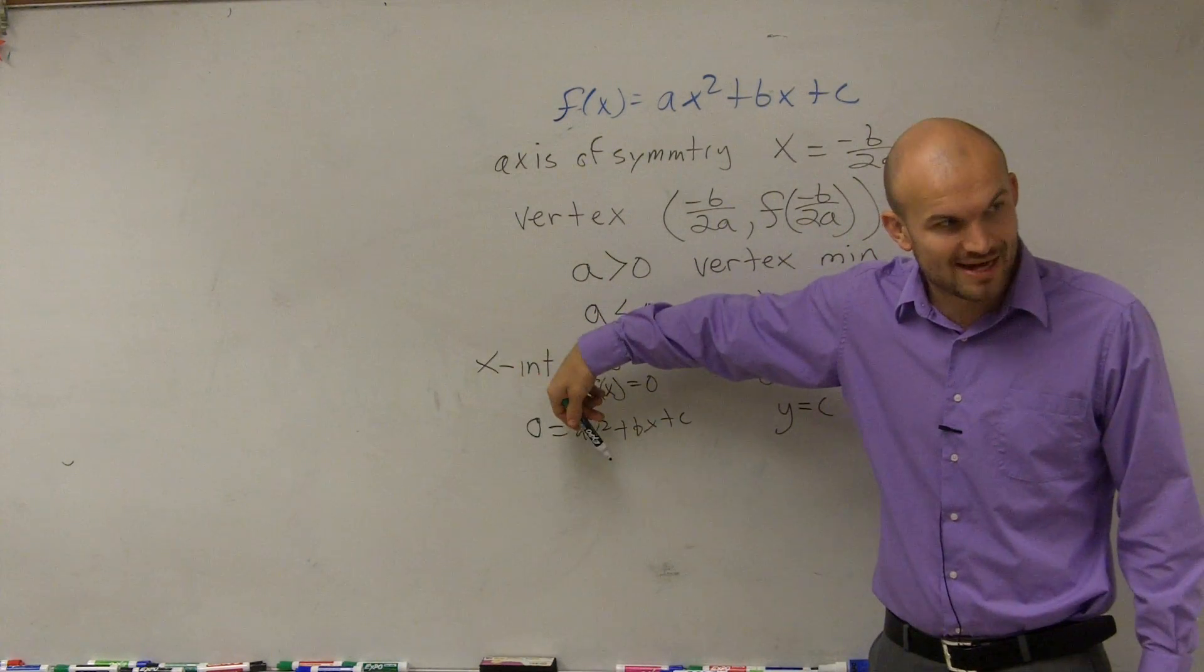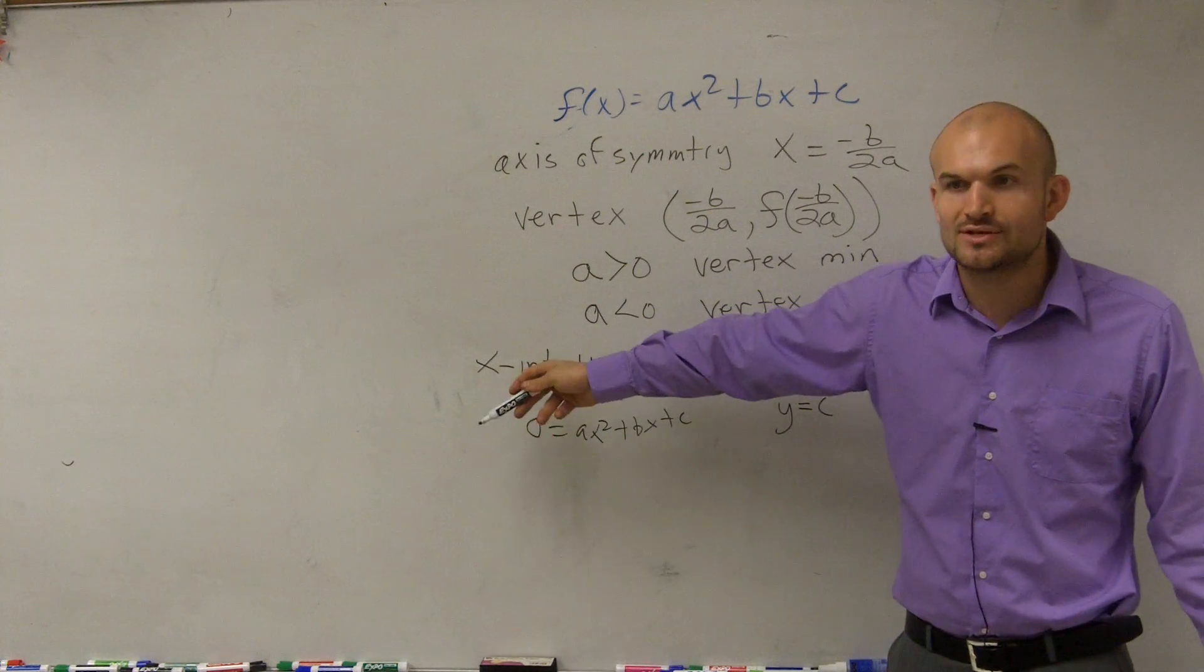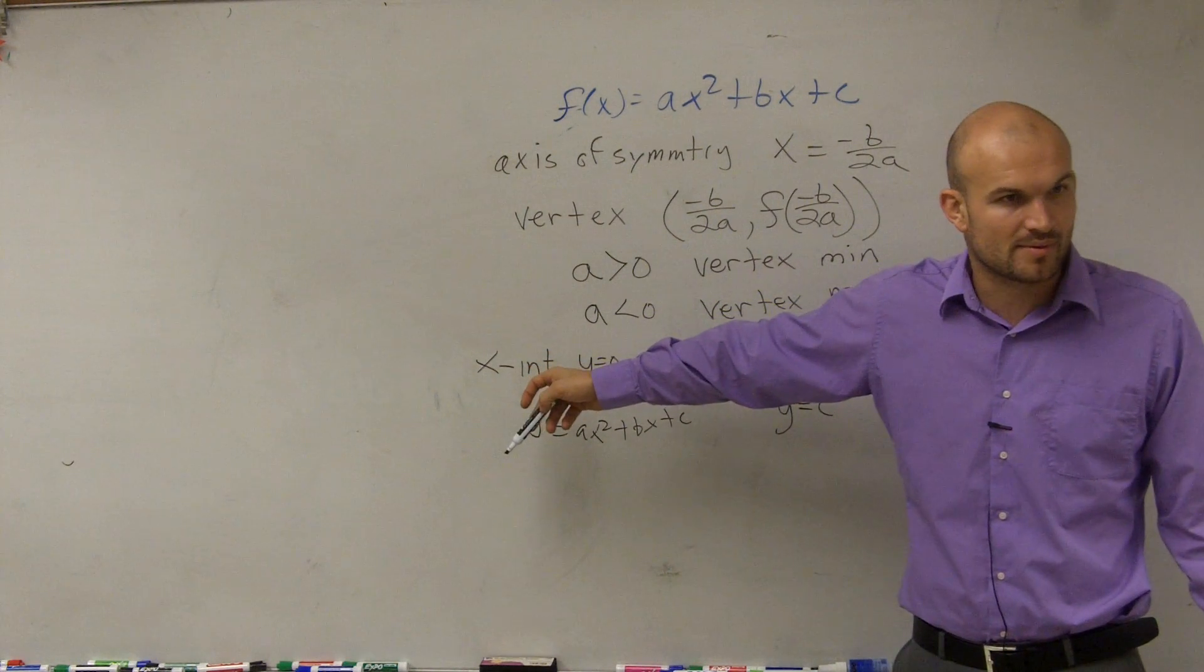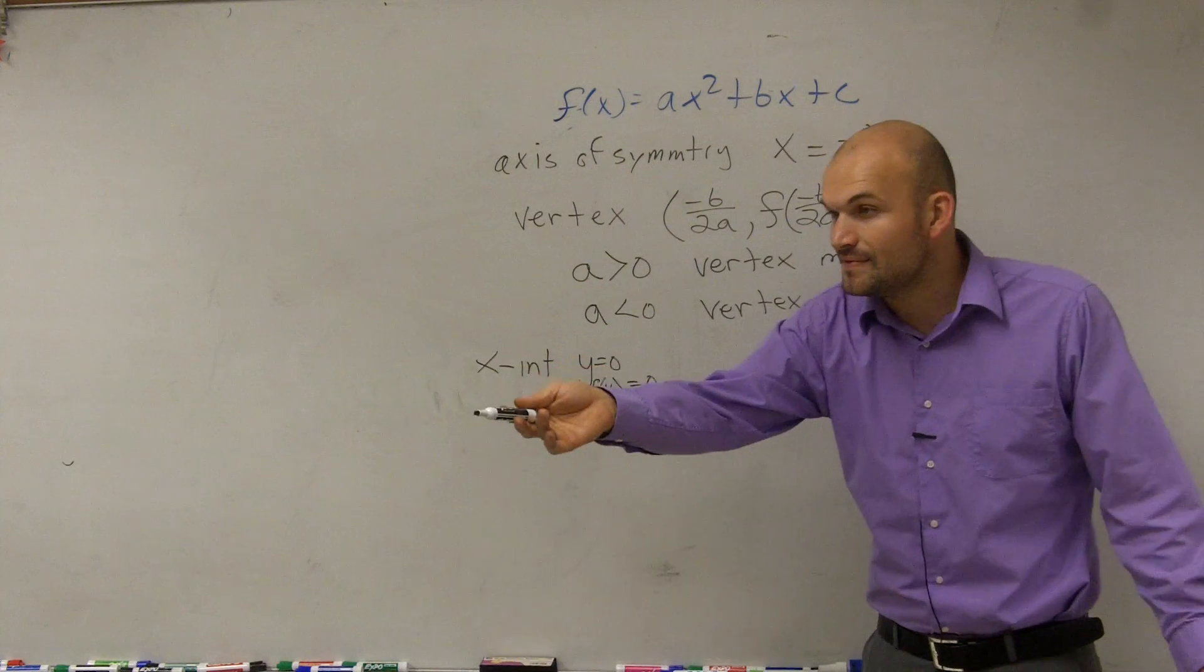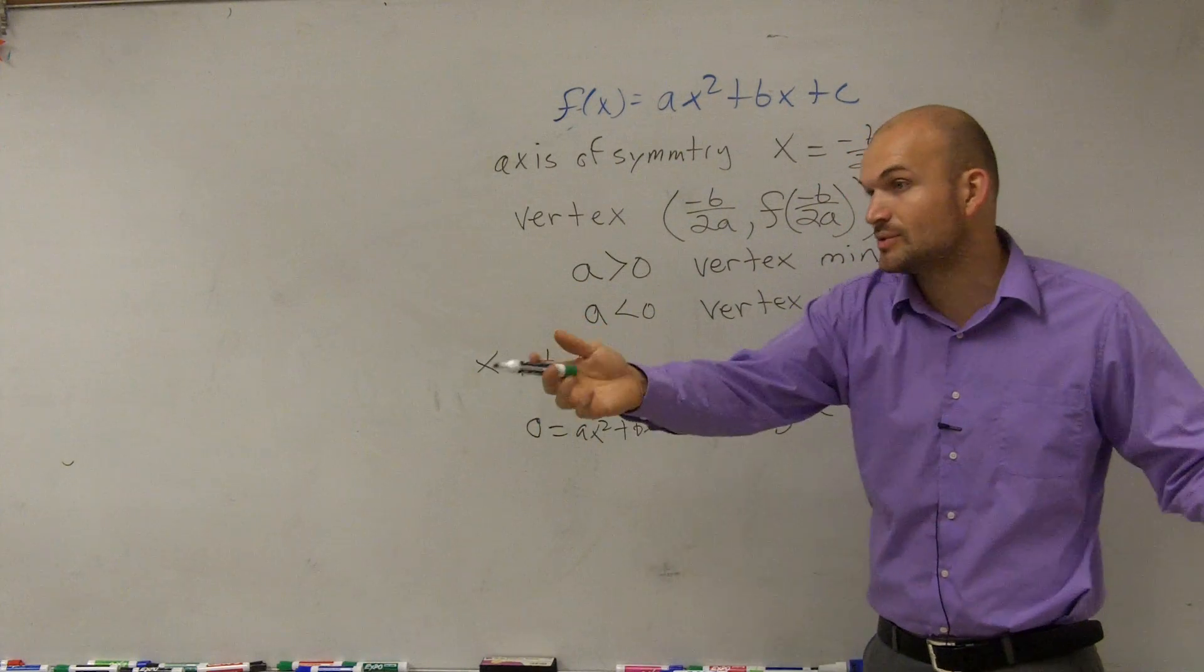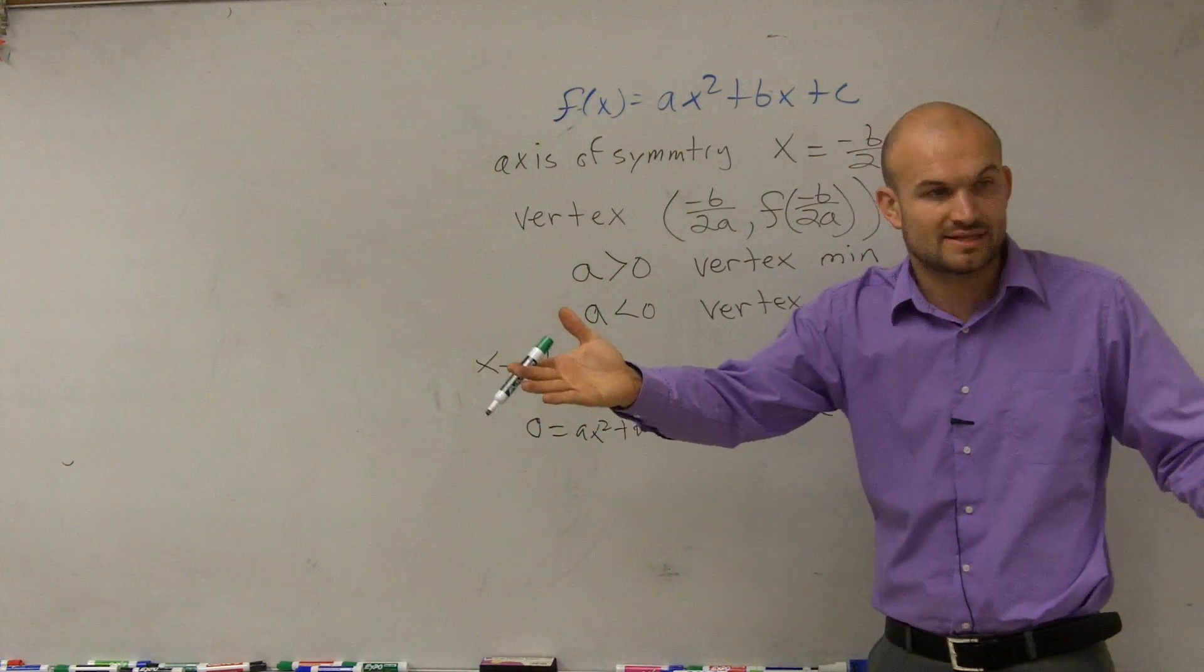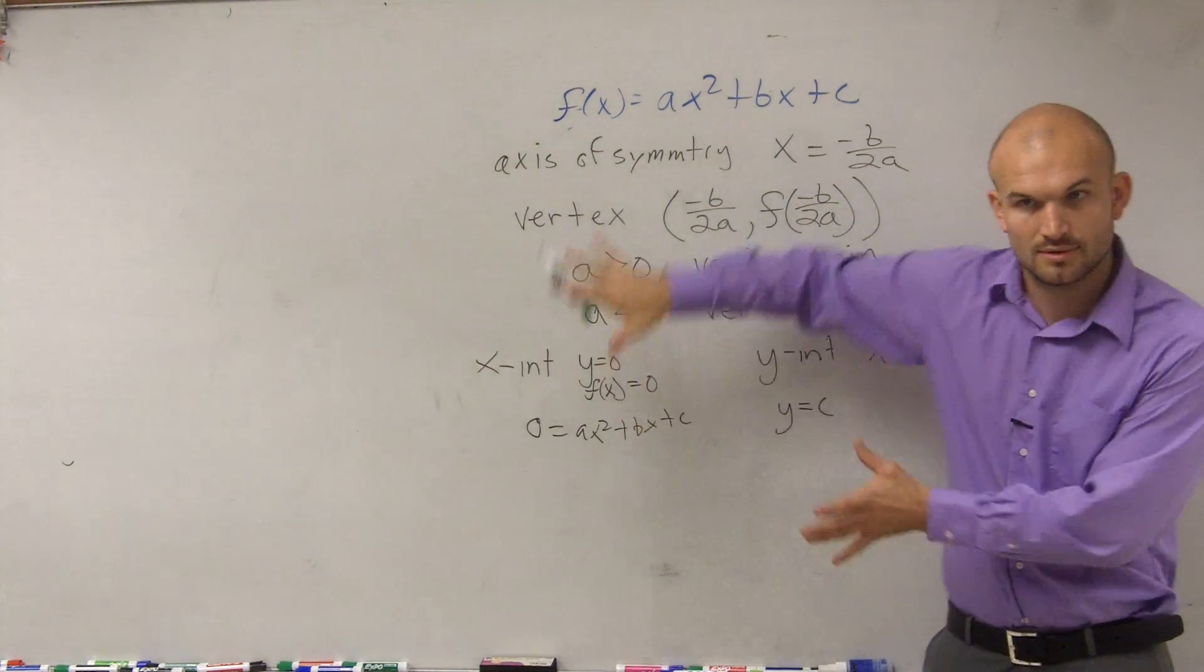We learned how to factor it, and then we solved by using the zero product properties. Everybody remember that? But then there were times when we couldn't factor it, and we had to rely on our table of values to find the x-intercepts.